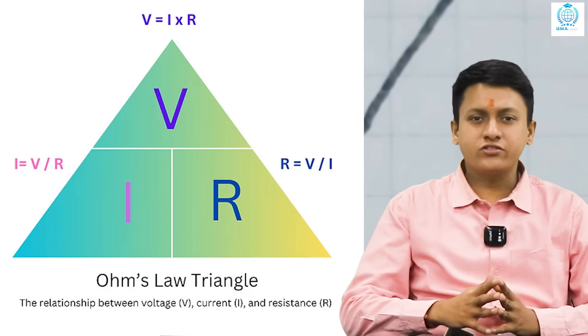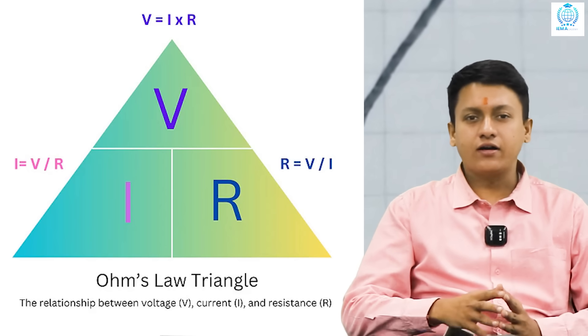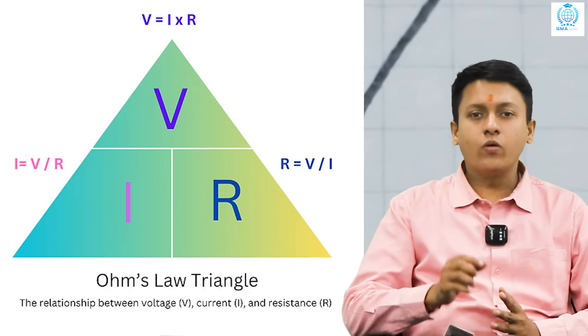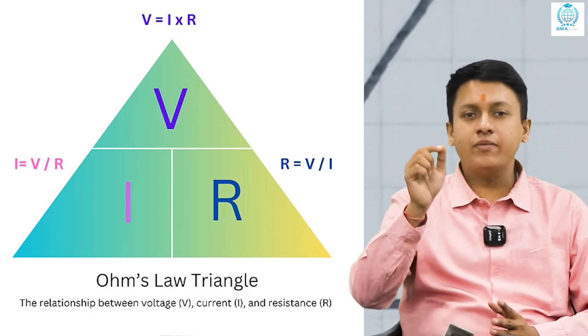Let's see a triangle trick. To remember formulas, draw a triangle, V, I, R. To find V, we do I into R. To find I, we do V divided by R. And to find R, we do V divided by I.